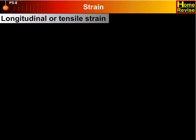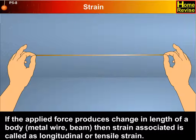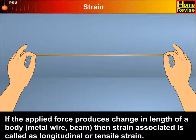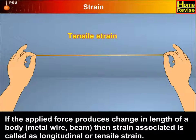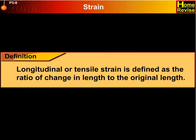Longitudinal or tensile strain: if the applied force produces change in length of a body, for example in a metal wire or beam, then the strain associated is called longitudinal or tensile strain. It is defined as the ratio of change in length to the original length.